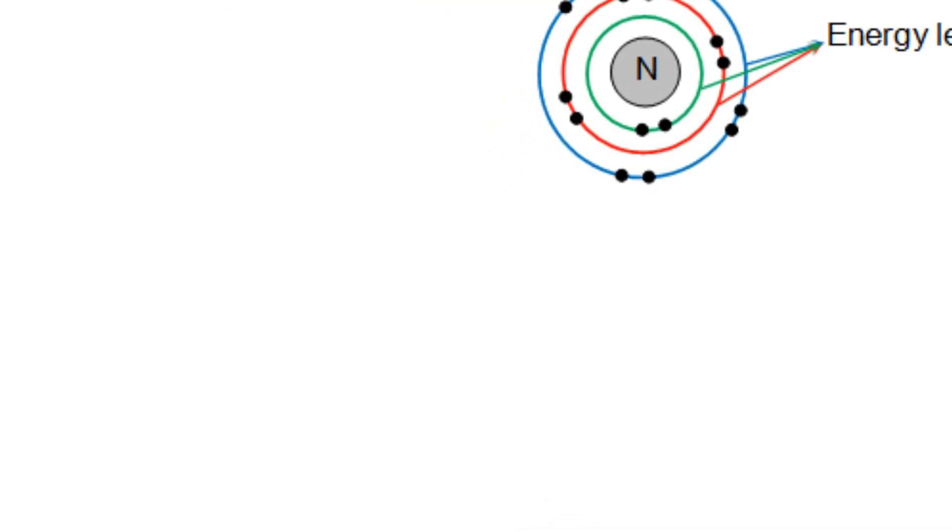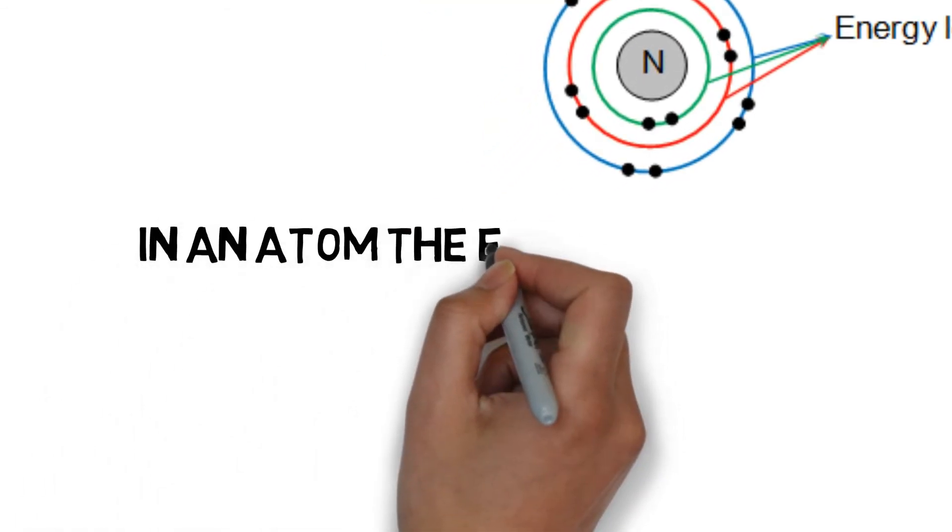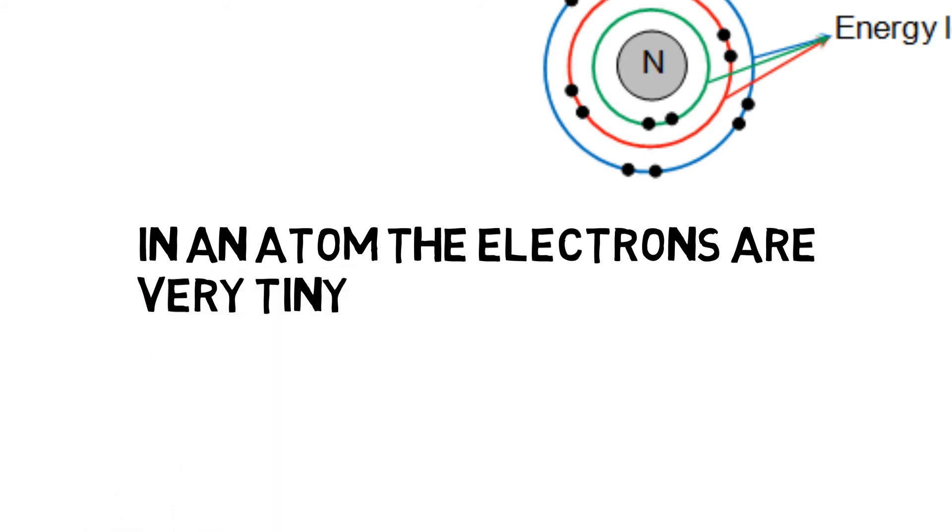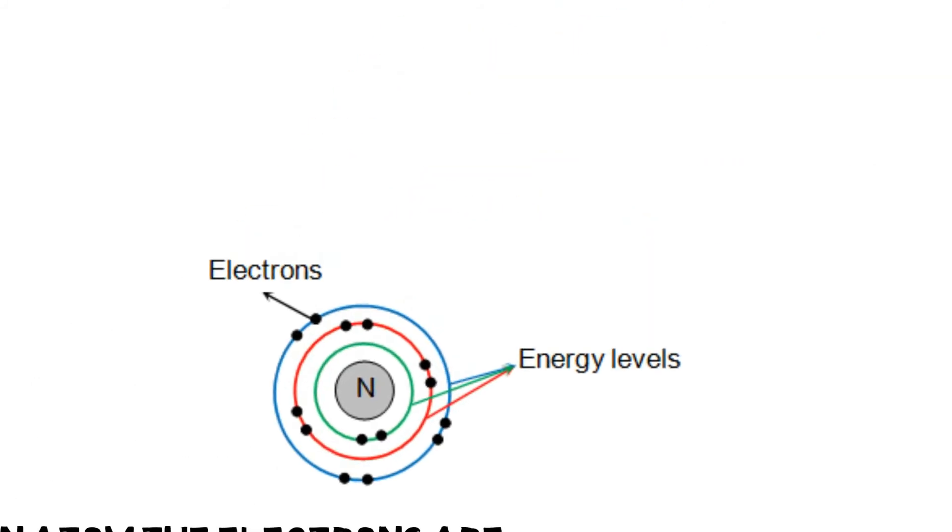You may wonder that electrons being so tiny and photons even tinier, how are they able to hit each other? How is a photon able to strike the electron?